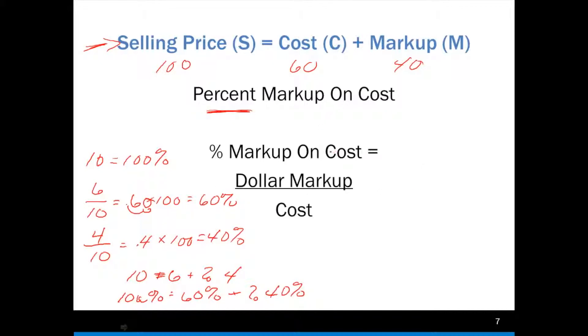So percentage markup on cost. Now, if we're told that our cost is 60 and our markup is 40, we can calculate our percent markup on cost, and you'll see why we need to calculate this percent markup in the next slide. But to do that, we know our dollar amount is 40 and our cost is 60. So 40 divided by 60 is 0.6666 and that's just going to go on and on.